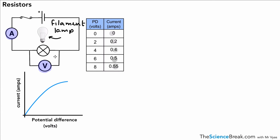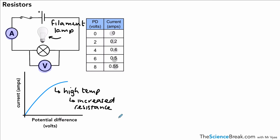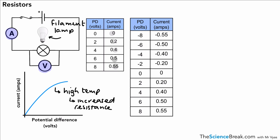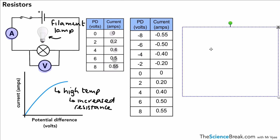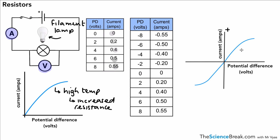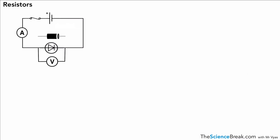The values may rise proportionally at first, but then they don't rise by the same amount as we increase potential difference. As we increase potential difference, higher current causes the filament to reach a higher temperature, giving increased resistance. So the current does increase, but not by as much at higher potential differences. Continuing into the negative direction gives the same results with negative numbers, producing an almost S-shaped curve because of the change in resistance due to temperature change.